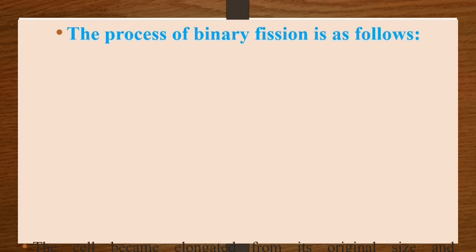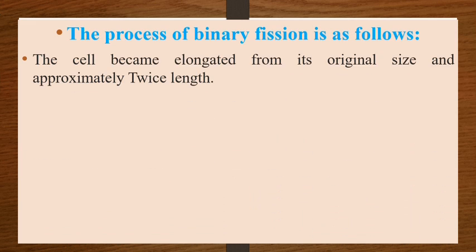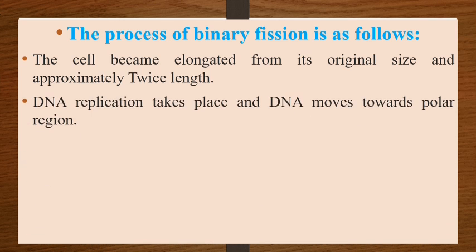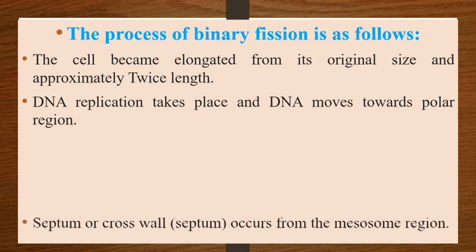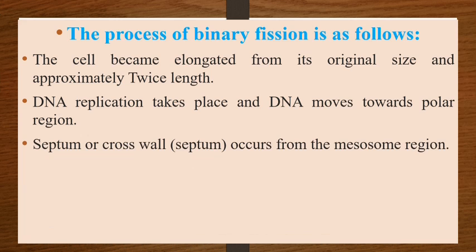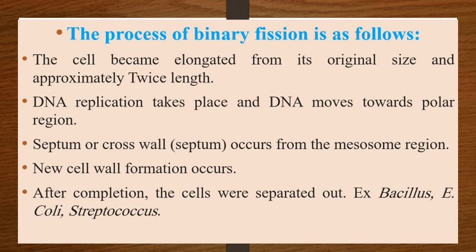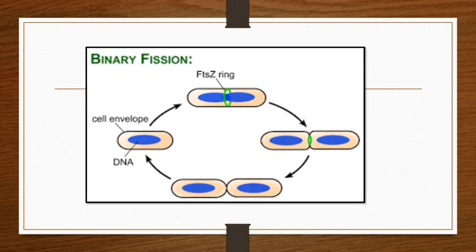The process of binary fission is as follows: the cell becomes elongated to approximately twice its original length. DNA replication takes place and DNA moves toward the polar region. New cell wall formation occurs, and after completion, the cells separate out from the mother cell. Examples include Bacillus, Escherichia coli, and Streptococcus.